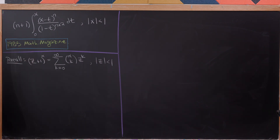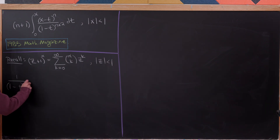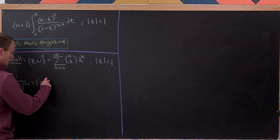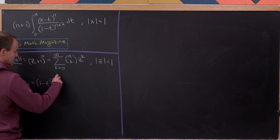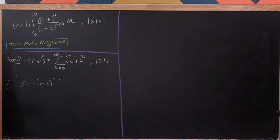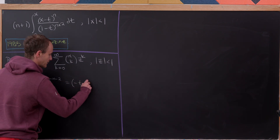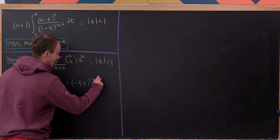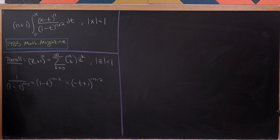Let's apply this to our problem. We take 1 over 1 minus t all raised to the n plus 2, and write that as 1 minus t raised to the minus n minus 2. We view this as minus t plus 1 raised to the minus n minus 2, and expand using the formula with z replaced by negative t.